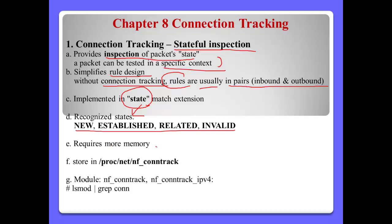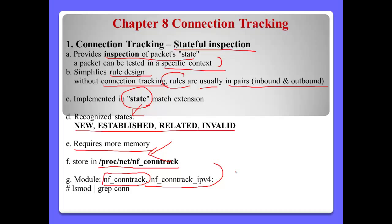If we want to use the connection tracking feature in IP tables, we need more memory, because IP tables stores all tracking information to a file. To use connection tracking, please check these kernel modules: nf_conntrack and nf_conntrack_ipv4. If we have these modules from the kernel, we can use the connection tracking features.